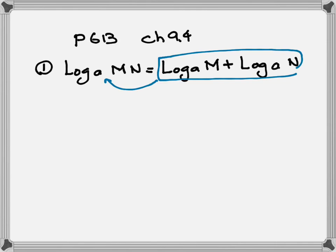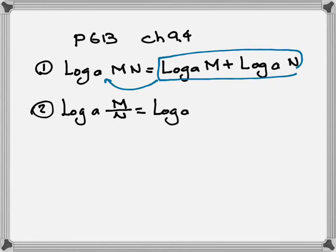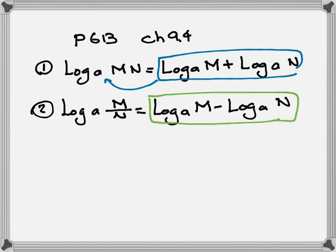Next, the second equation: we have log base a of m divided by n. From division, we can change to subtraction. So we get log base a of m minus log base a of n. Also, if they give you in subtraction, you can change back to division. So division can change to subtraction, and subtraction can change to division.